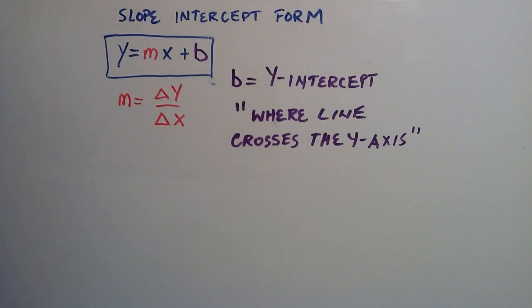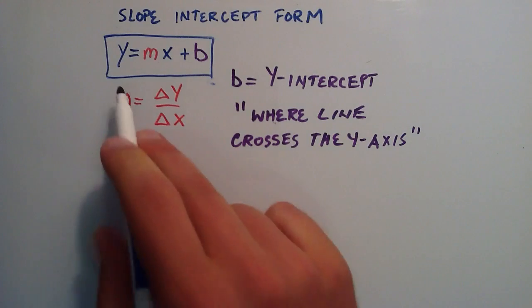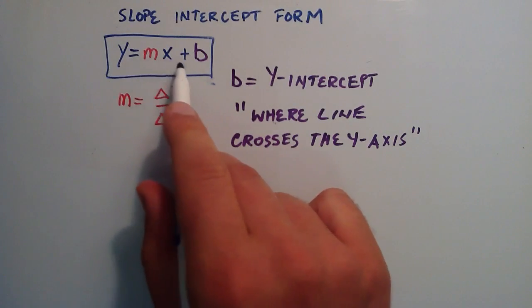Hello everyone, this is Paul. Today I'm going to be explaining the slope-intercept form of a line. So the slope-intercept form I have boxed here, y equals mx plus b.